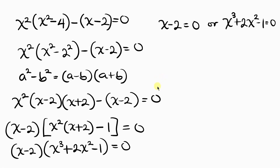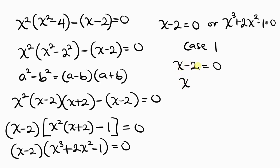Let's take Case 1, where we have x minus 2 equal to 0. In order to get the first root of x, we move negative 2 to the right-hand side, so x equals 2. But we don't know yet if this is actually the correct answer — let's move forward.